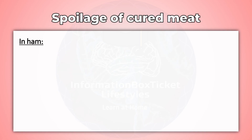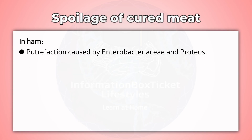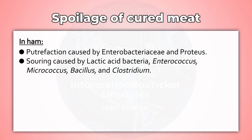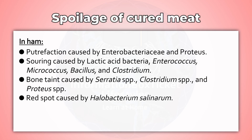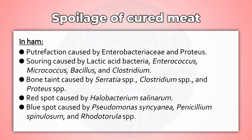In ham: putrefaction caused by Enterobacteriaceae and Proteus; souring caused by lactic acid bacteria, Enterococcus, Micrococcus, Bacillus, and Clostridium; bone taint caused by Serratia species, Clostridium species, and Proteus species; red spot caused by Halobacterium salinarum; blue spot caused by Pseudomonas syncyanea, Penicillium spinulosum, and Rhodotorula species; and dark spot caused by Alternaria.